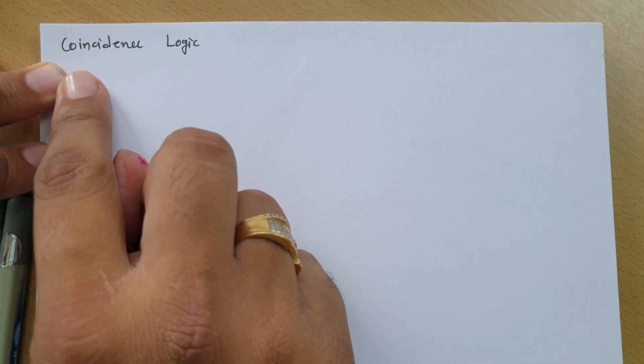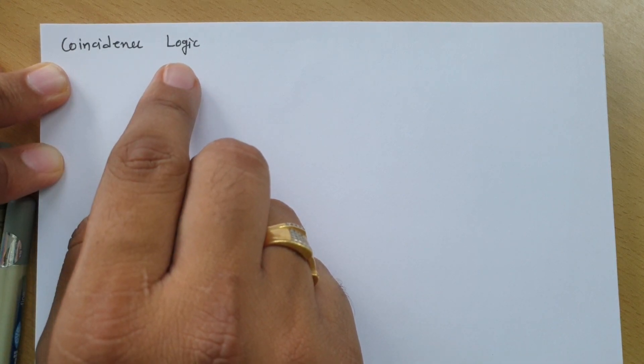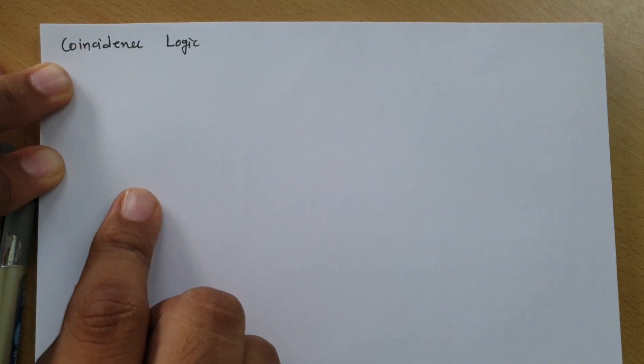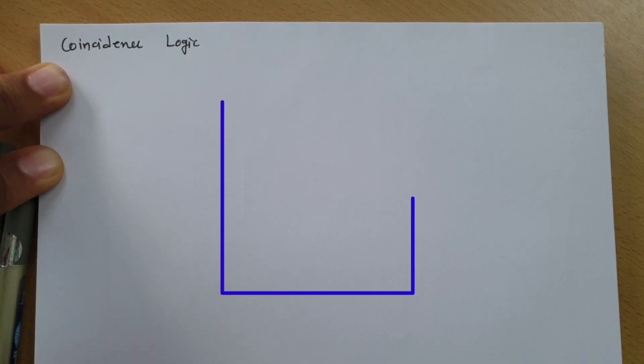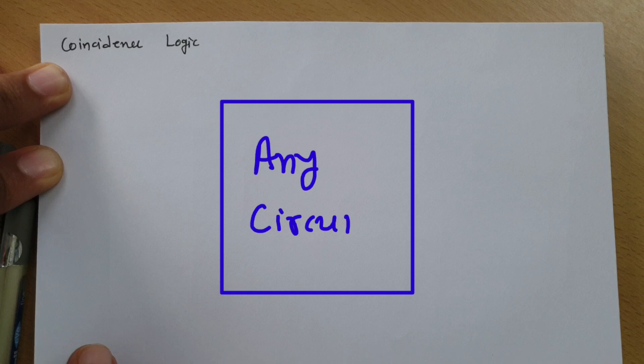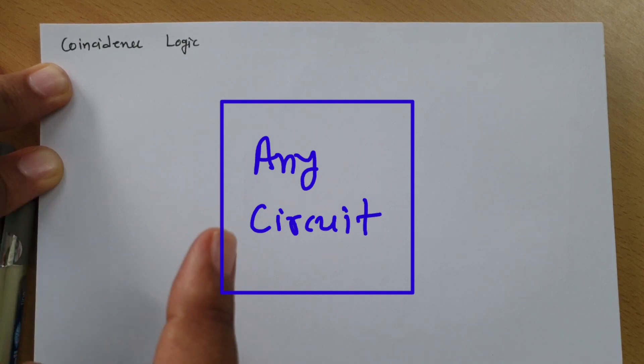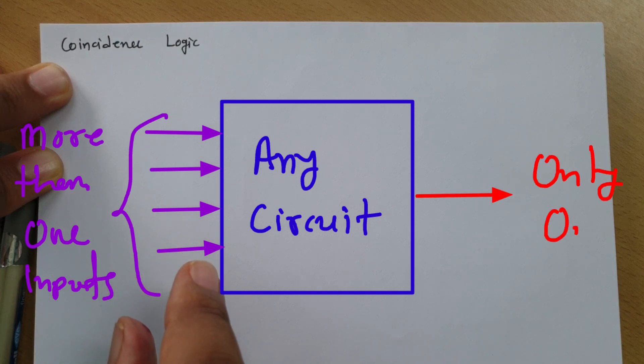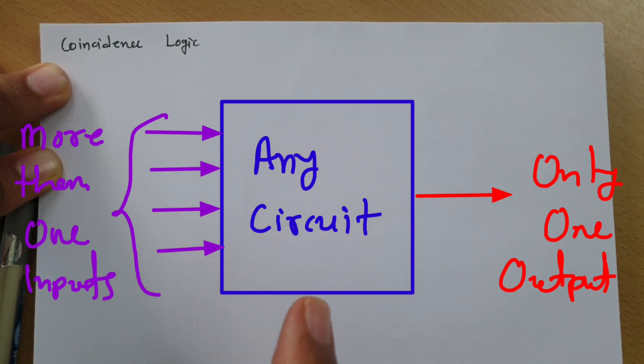Let me explain the basic meaning of coincidence logic first. Coincidence logic follows two conditions. First condition: in coincidence logic, inputs will be greater than or equal to two, and there is only one output.